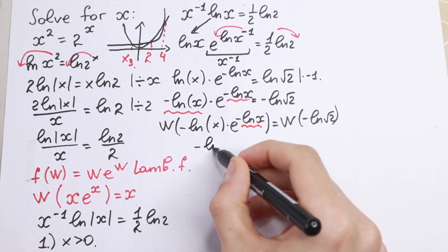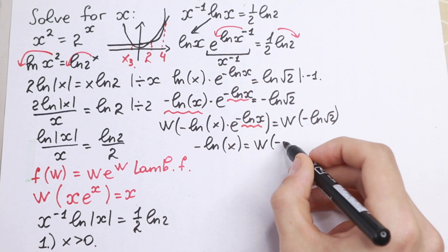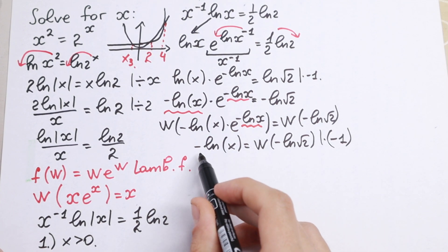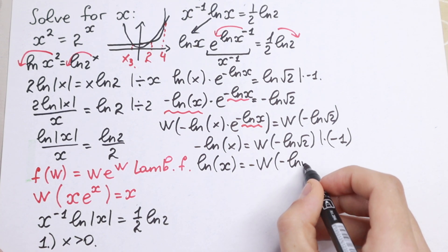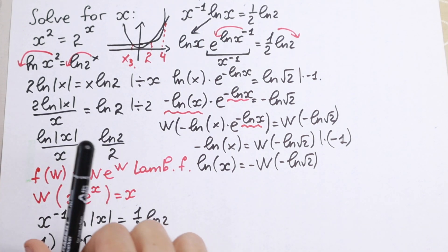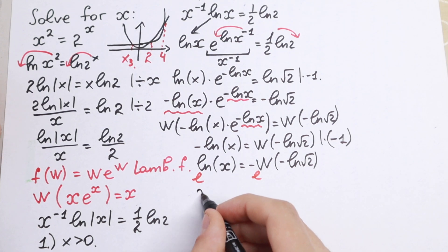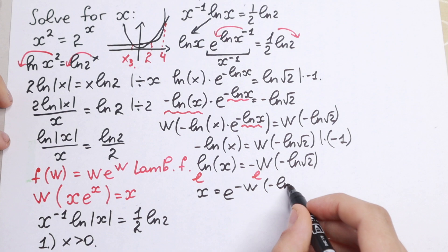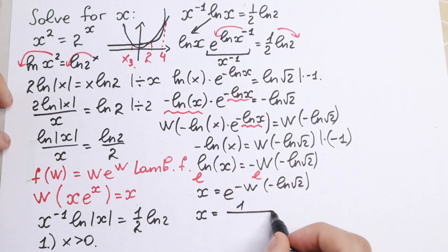Multiplying both sides by minus 1, we get ln(x) = −W(−ln(√2)). Taking e of both sides, the e and natural log cancel, leaving x = e^(−W(−ln(√2))). We can bring this to the denominator: x = 1 / e^(W(−ln(√2))).